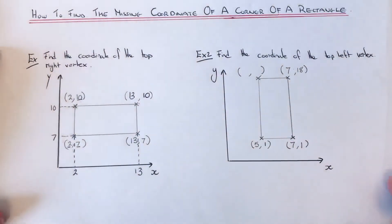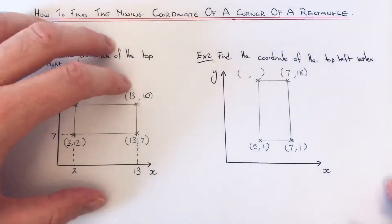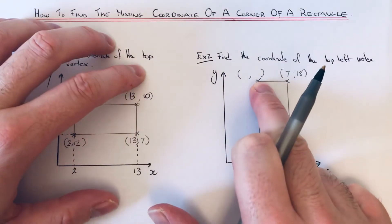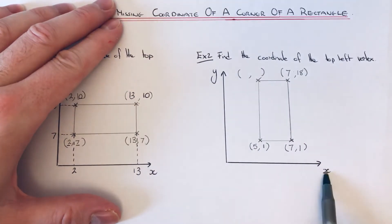Let's have a look at one more example. We've got to find the coordinate of the top left vertex of the rectangle this time. Again, mark the numbers on the x and the y-axis.